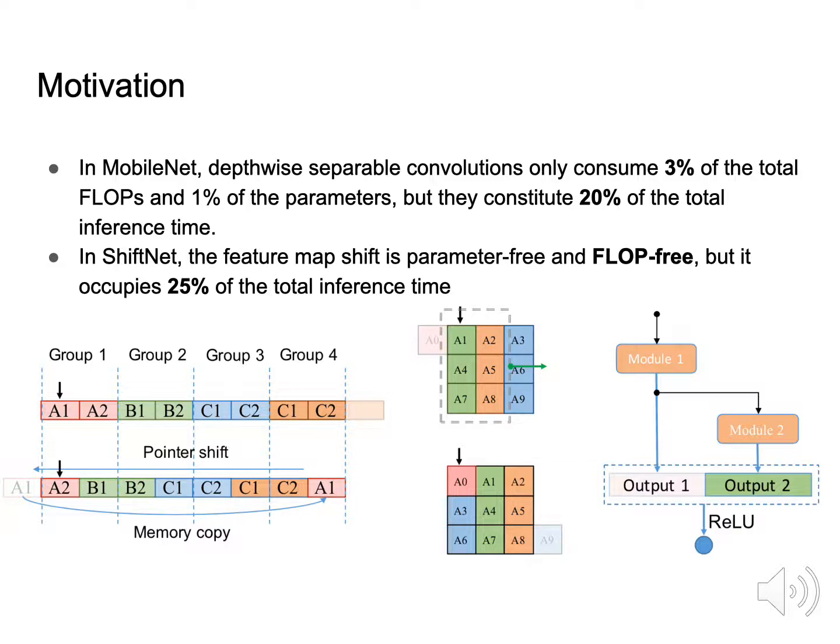The motivation is that nowadays a lot of efficient operations for speeding up CNNs are proposed. However, they are not as efficient as expected. For example, in MobileNet, the depthwise separable convolutions only consume 3% of the total FLOPs and 1% of the parameters, but they constitute 20% of the total inference time.